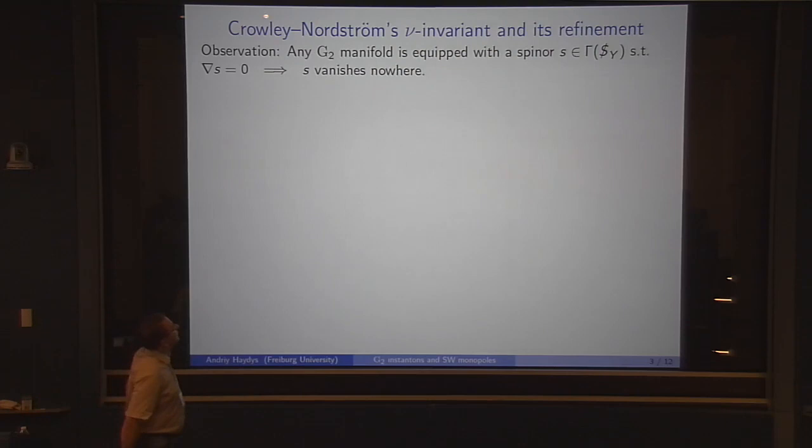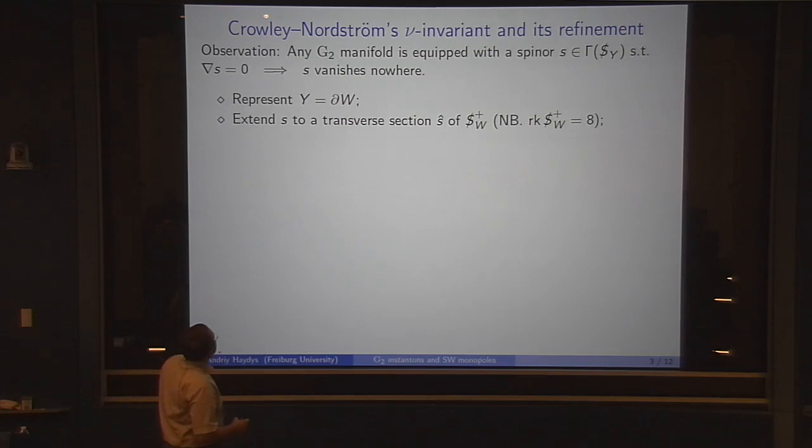This motivates the search for invariants of compact G2 manifolds. The essentially only known example today is the Crowley-Nordström-Nu invariant and its refinement. This is based on the following observation: if you have a G2 manifold, then you also have a covariantly constant spinor. In particular, the spinor S vanishes nowhere.